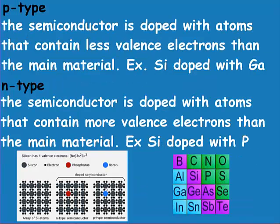There are two types of semiconductors: p-type and n-type. In a p-type semiconductor, the semiconductor is doped with atoms that contain fewer valence electrons than the main material. Silicon has four valence electrons, so if we dope it with boron, aluminum, or gallium, it becomes a p-type semiconductor — p for positive. Boron has one less electron, so it would be an electron acceptor.